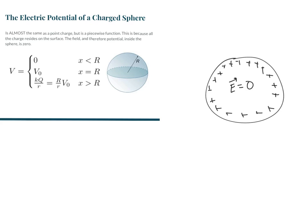So if you're looking at a sphere with radius capital R, anywhere inside that sphere from zero to R is going to have a potential of zero. That's represented by the first line of the piecewise function. Side note: I messed up all these little x's right here — they should be lowercase r's. That little r is representative of how far away from the center you are measuring the potential. So if little r is less than big R, that potential is zero.